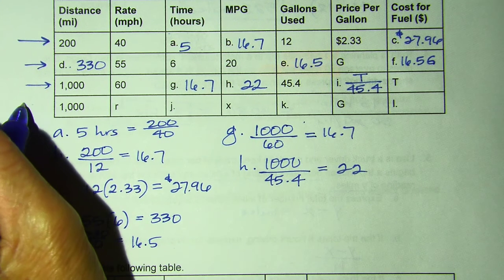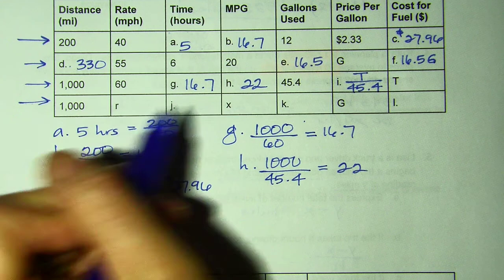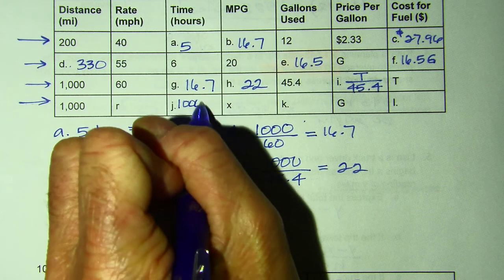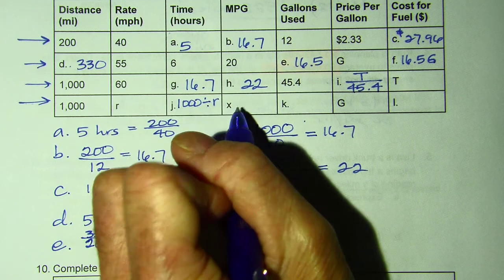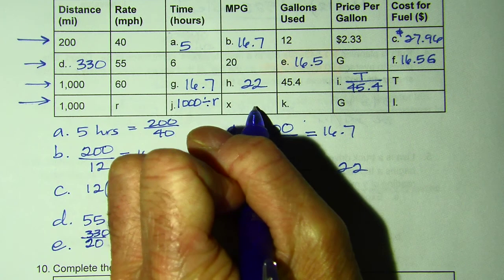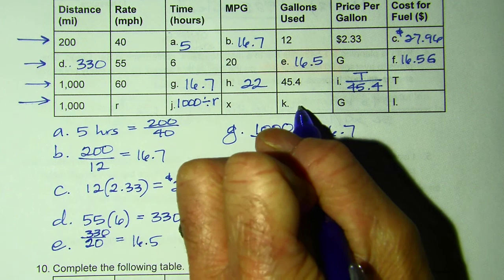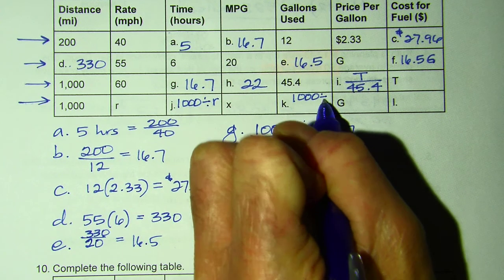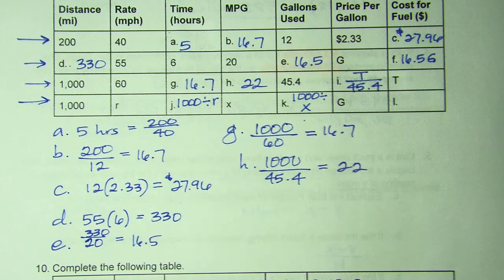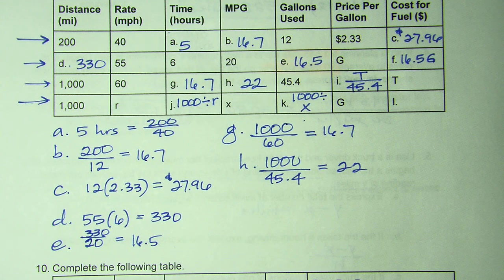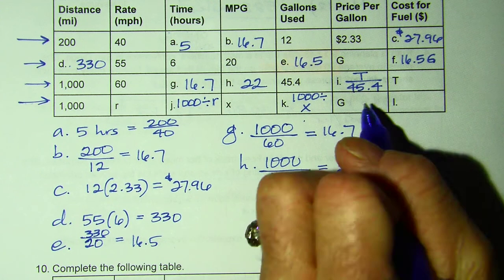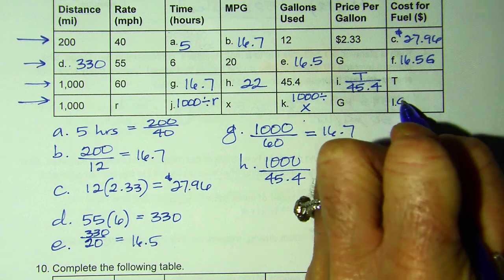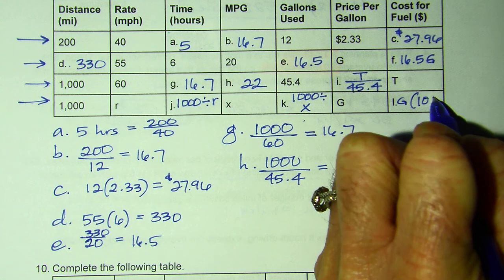And finally, the bottom one. Time would be 1,000 divided by R. Miles per gallon, they're just telling me it's letter X. Gallons used, so to find this, I would take my miles, and I would divide it by miles per gallon. Price is G, so this here should be G times what I got in box K.